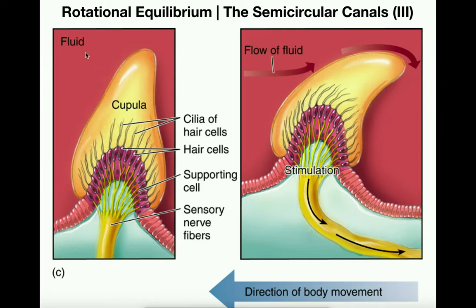You can imagine that if this fluid moves either left or right, that fluid is going to move the cupula in the same direction. If the fluid moved toward the right, the cupula is going to be pushed toward the right, causing changes in the firing rate of the axons that lead ultimately to the vestibular nerve. Likewise, if the fluid moved toward the left, the cupula is going to be moved toward the left, and again we're going to have differences in the firing rates of those axons.